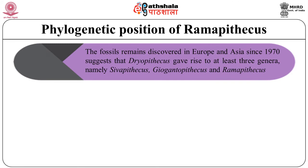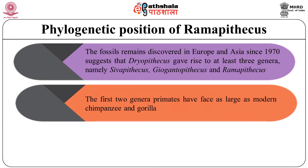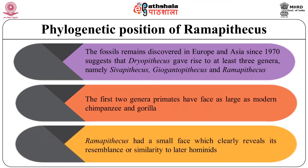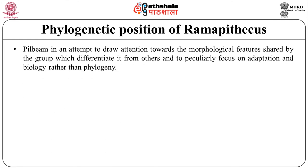Fossil remains discovered in Europe and Asia since 1970 suggest that Dryopithecus gave rise to at least three genera between 10 and 15 million years ago. These three genera are Sivapithecus, Gigantopithecus, and Ramapithecus. The first two genera had faces as large as modern chimpanzees and gorillas; however, Ramapithecus had a small face, which clearly reveals its resemblance and similarity to later hominids.